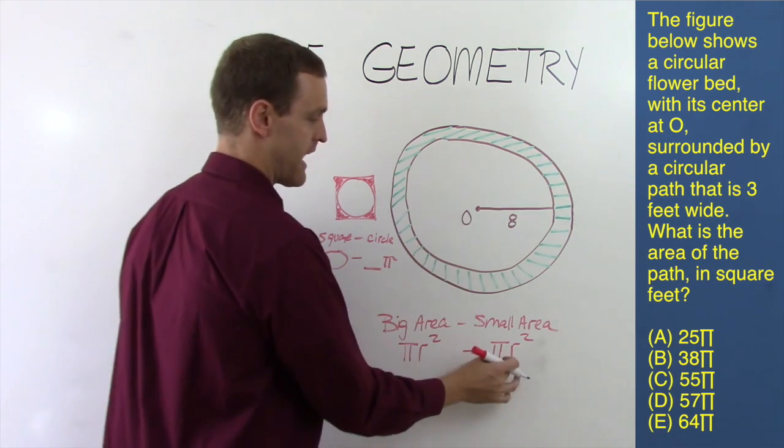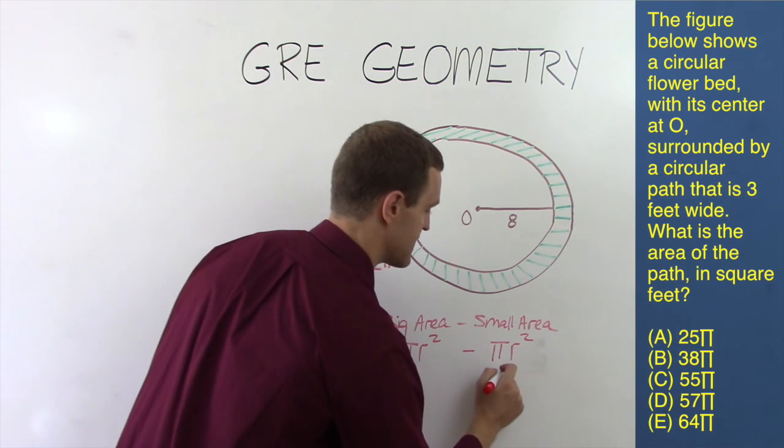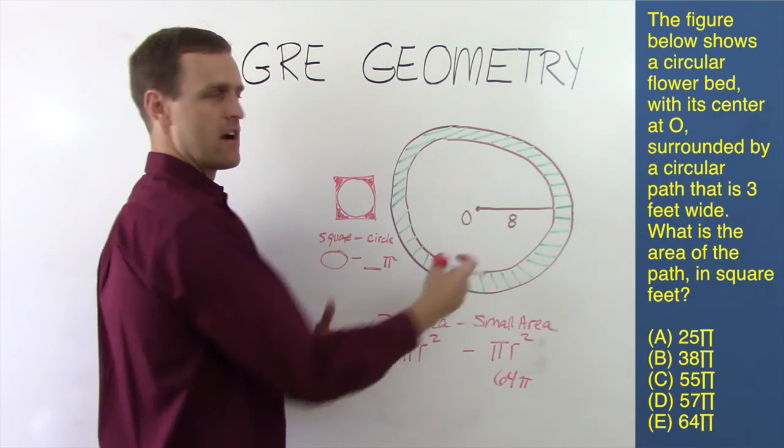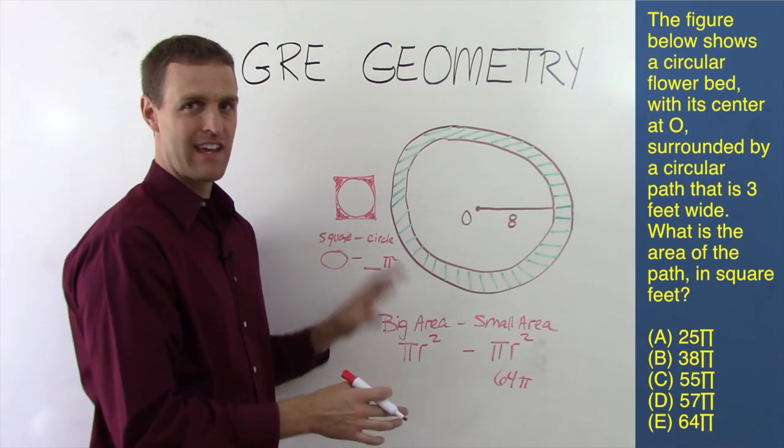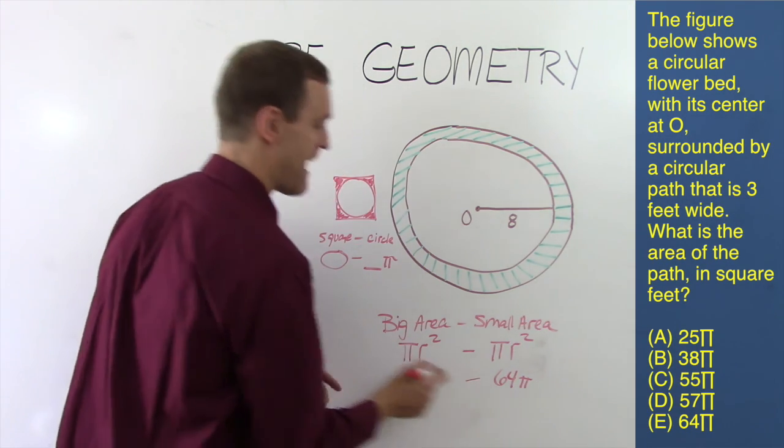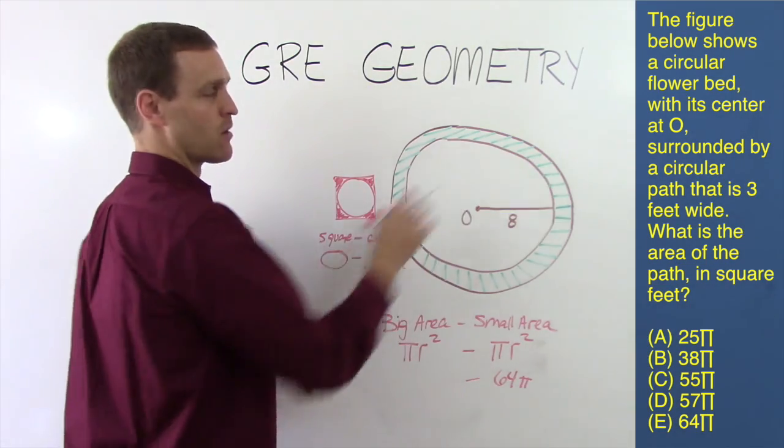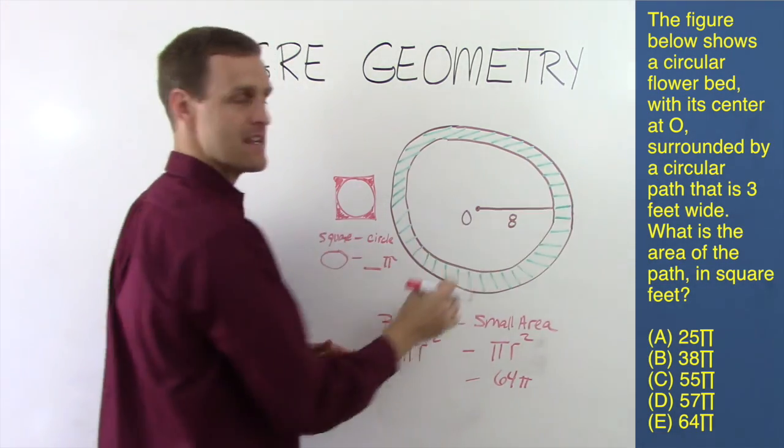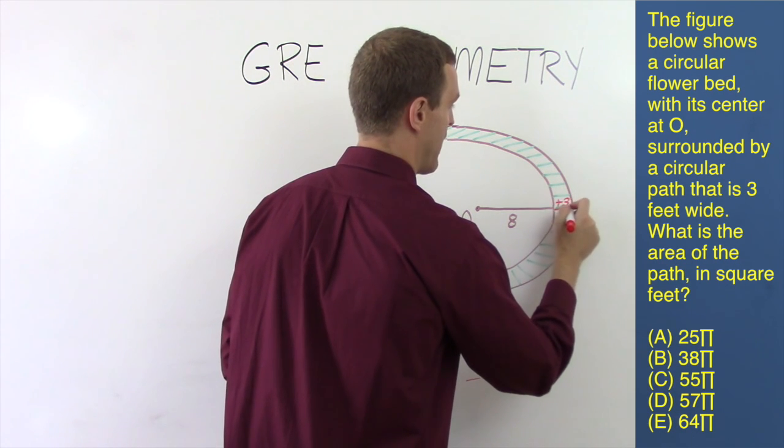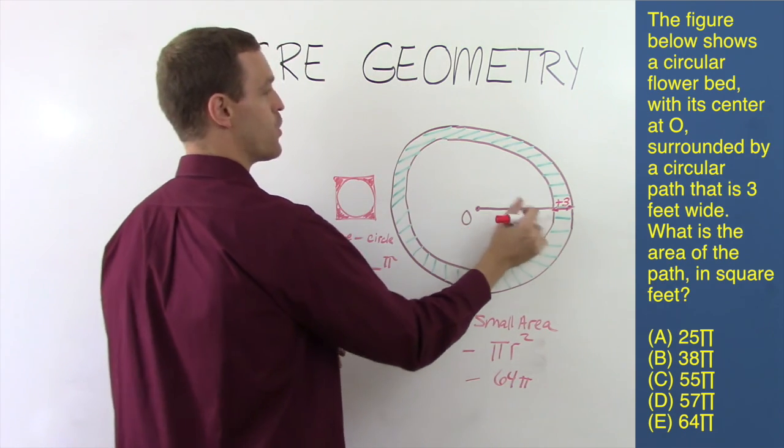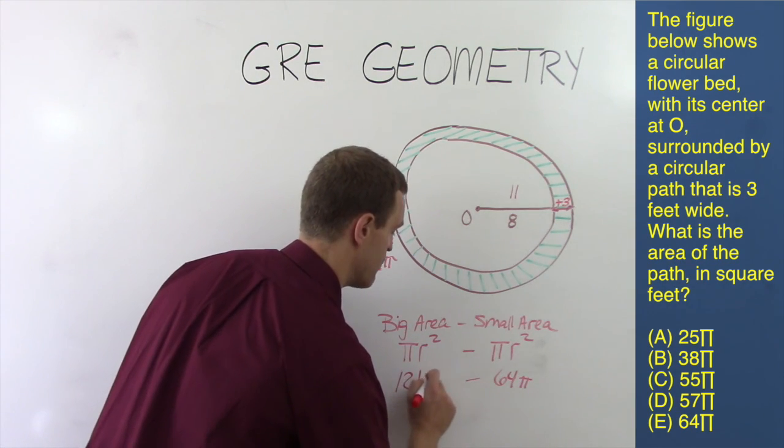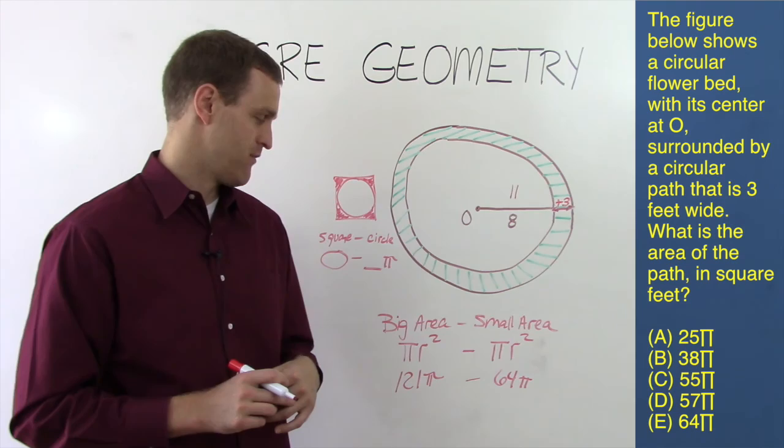And we're given that the small radius is 8. So 8 squared is 64 pi. So it's something minus 64 pi. Well, none of the answer choices really look like that, so I can't eliminate any yet. I have to actually find the first part. But like I said, a lot of times you will be able to. So it's something minus 64 pi. Well, what's the radius of the big circle? Well, the problem says that the path is 3 feet wide. So we need to add another 3 feet. That's how wide this thing is. So in that case, the radius is going to be 11. And so 11 squared is 121.